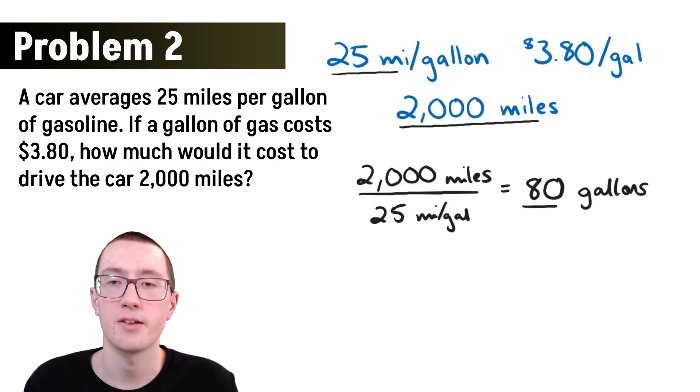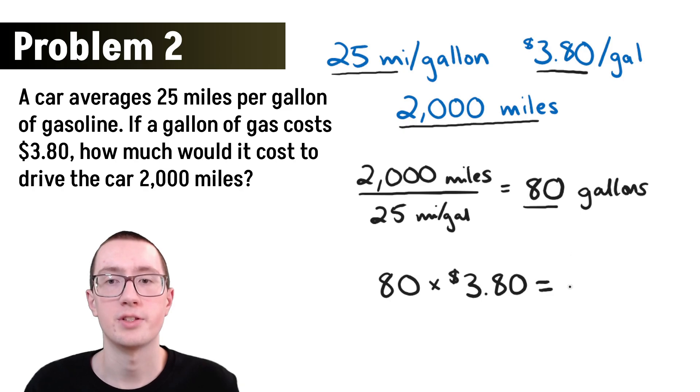We know that we've used 80 gallons, and we know that a gallon of gas is $3.80. So to figure out how much money we've spent, we'll just multiply them together. We'll take 80 times $3.80. And if you put this in your calculator, you should get 304. So there we go. We figured out how much money we've spent in total. We've spent $304 on gas for this trip.